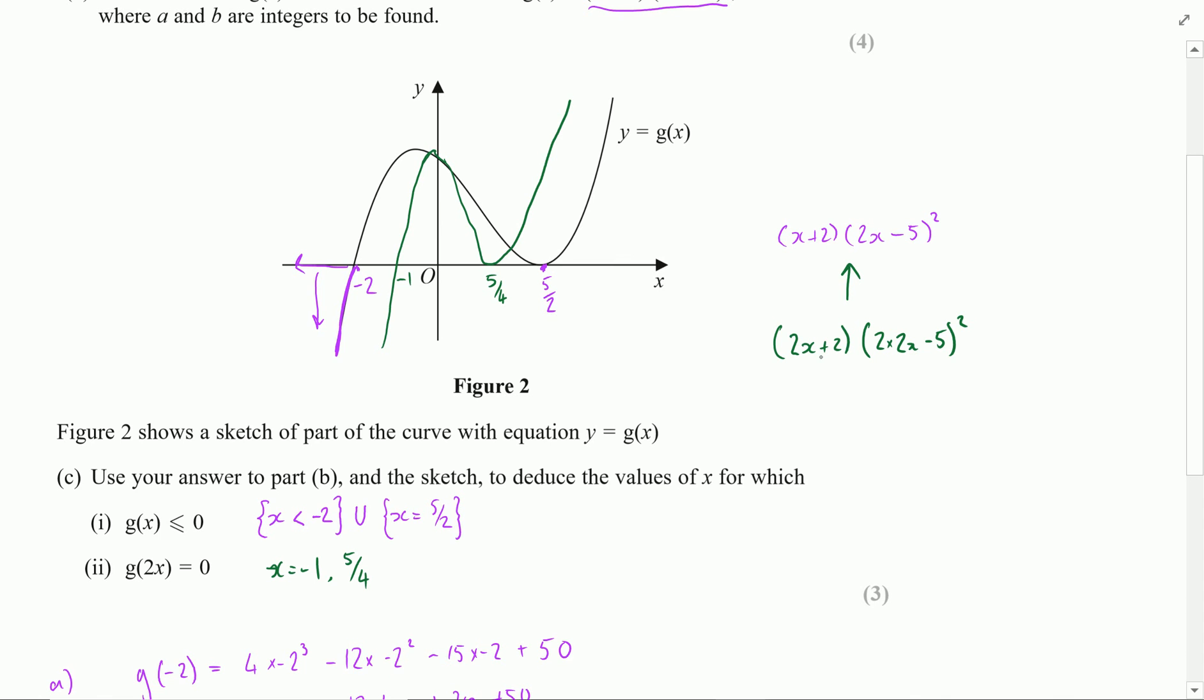Well in the first case it's going to be where the first bracket equals 0 and that's going to be where x takes the value minus 1. And in the second bracket it's going to be where 4x minus 5 takes the value 0 which is at the value where x is equal to 5 over 4. So the exact same solution is just a second method of getting there.